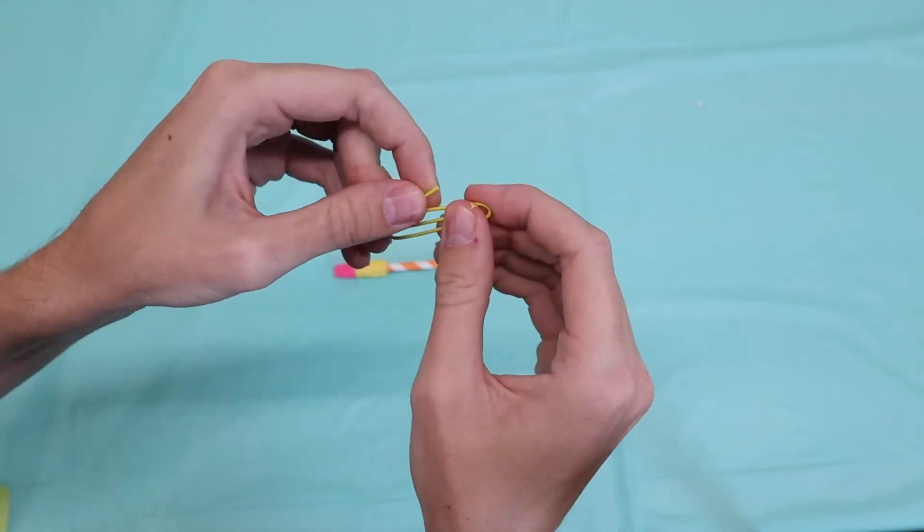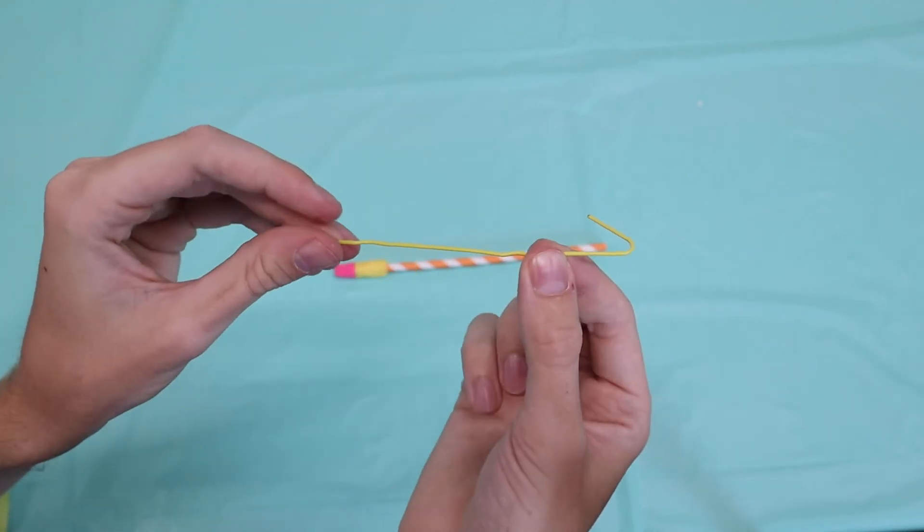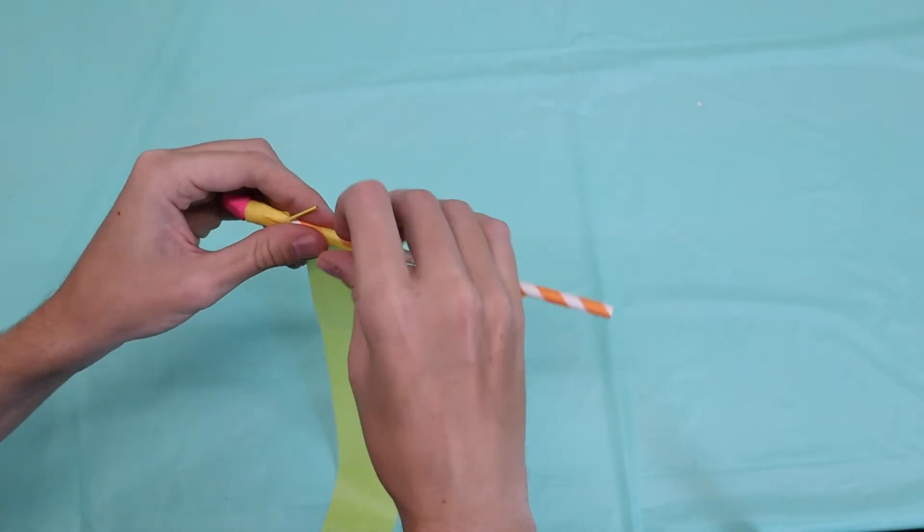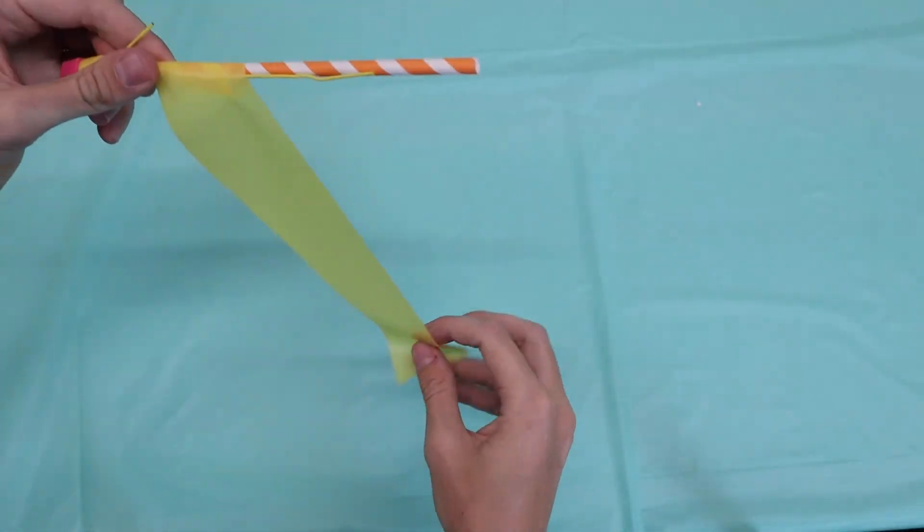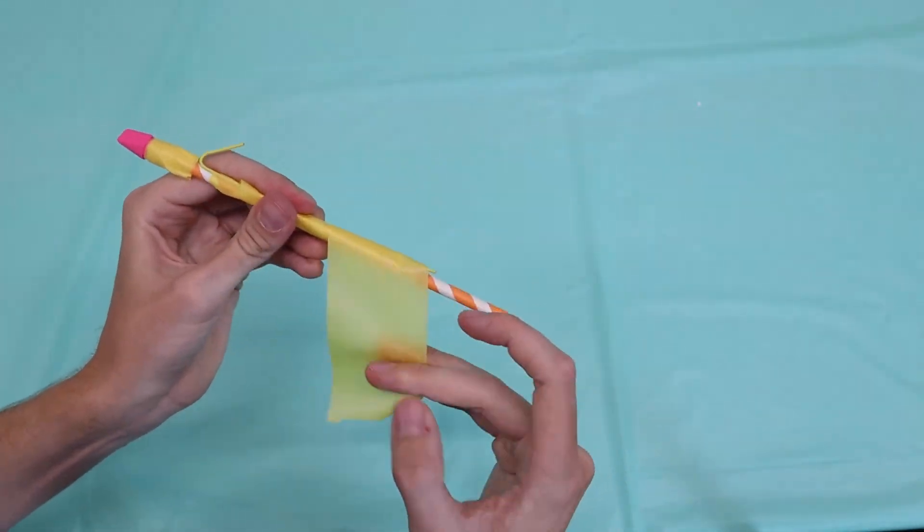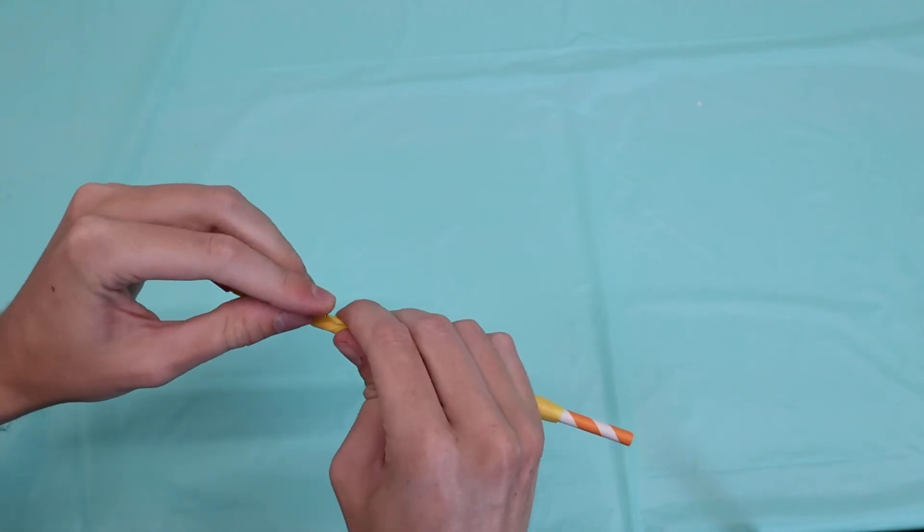Step two is to open up our paper clip so that it looks kind of like a J. Take that shorter leg and bend it further out. Now you're going to tape your paper clip so that that shorter leg is just behind the eraser head. This will be the part the rubber band attaches to, so feel free to adjust it as necessary.